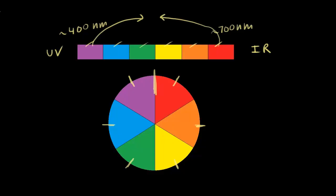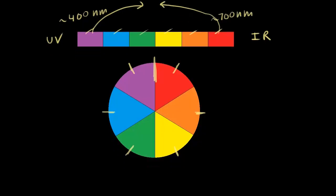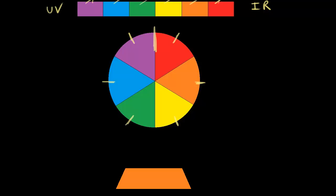This is useful because it allows you to think about why things appear to be a certain color. For example, if I look at this orange sheet of paper and try to understand why it's orange, we know that white light consists of all the different colors of the rainbow. We can simplify that and think about white light as two complementary colors — blue wavelengths of light and orange wavelengths of light.